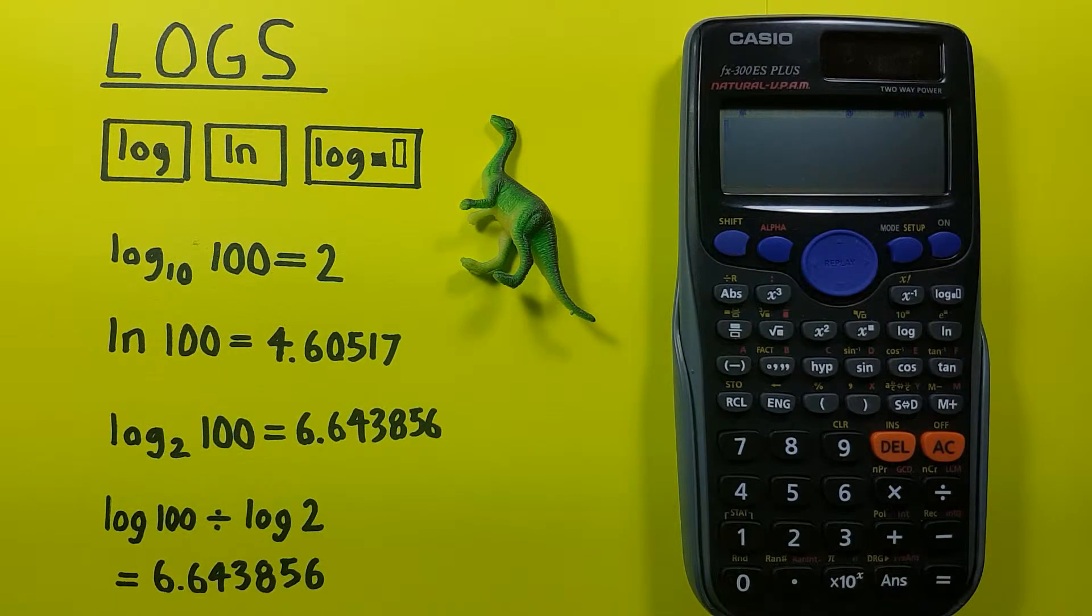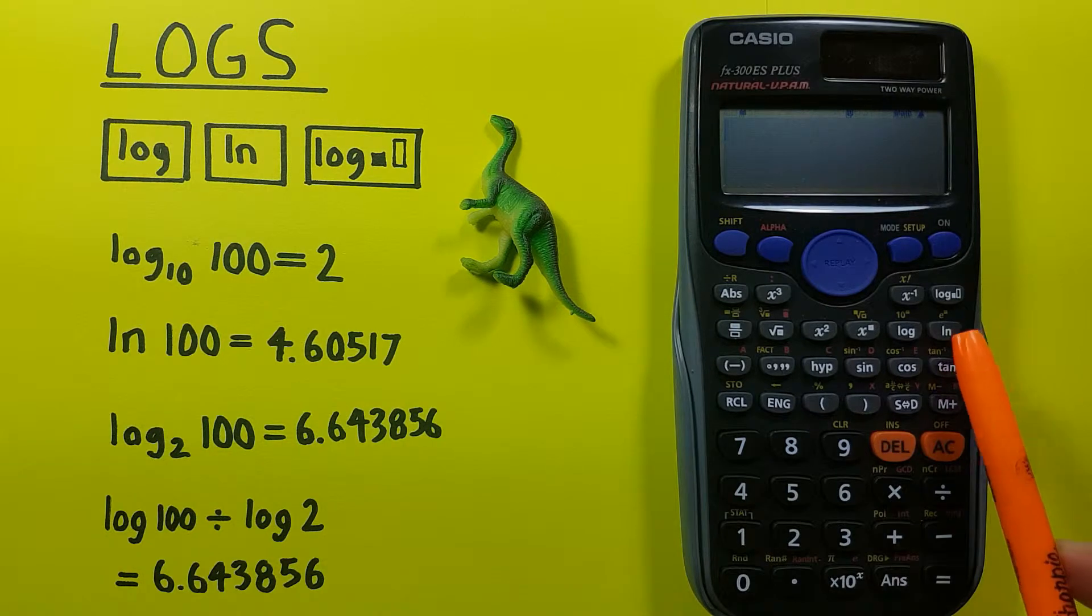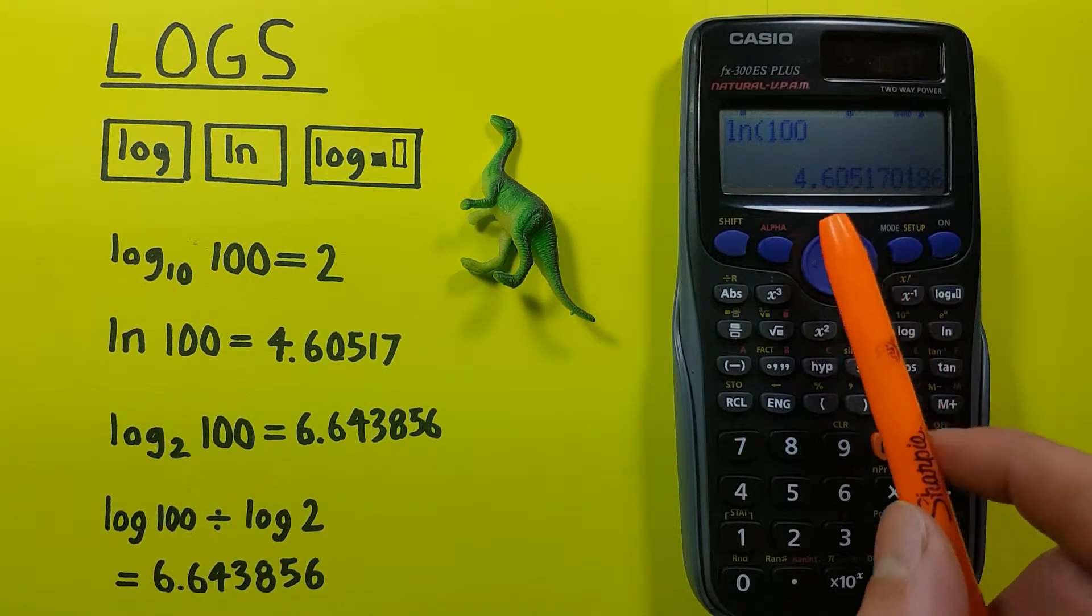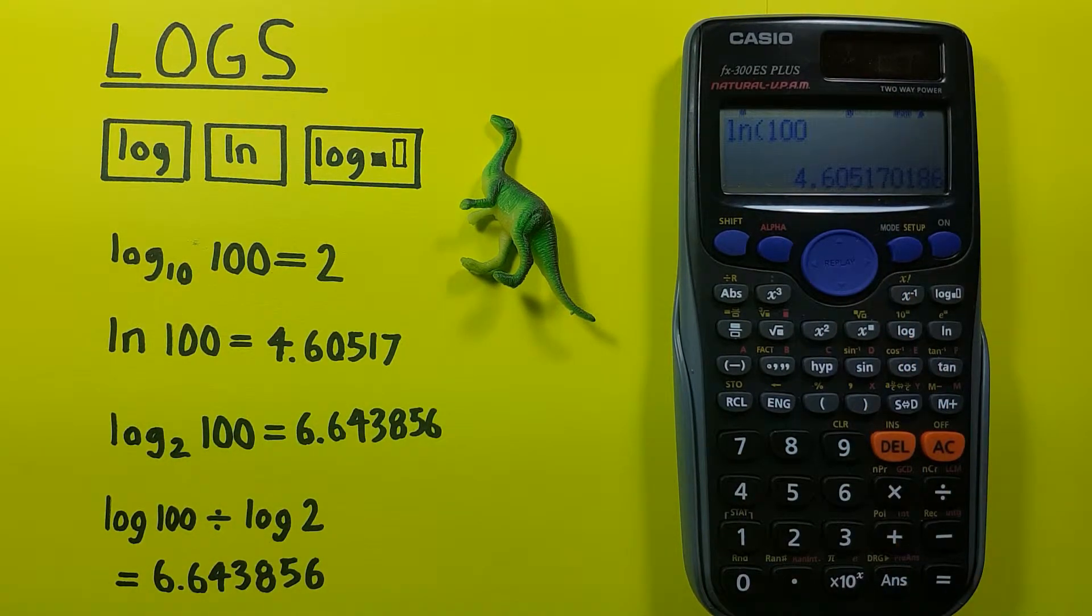Same thing with the natural log. If we want to do natural log of 100, again we press the LN and enter the 100 and press equals, and we get the result of 4.60517.